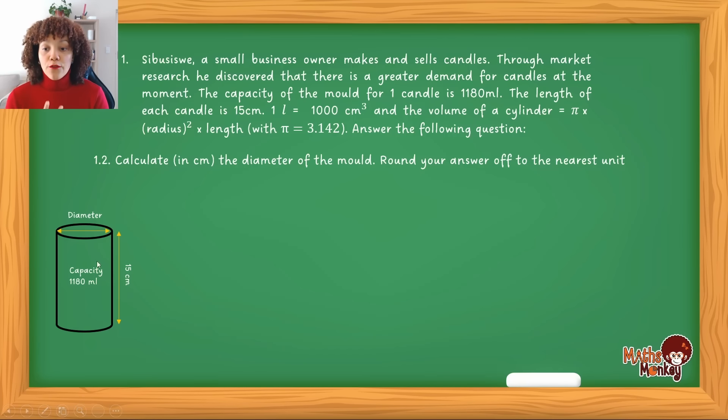So there we understand what is actually being asked. Now if you look at this, you think, okay, the volume of a cylinder is given in the question: pi times radius squared times length.